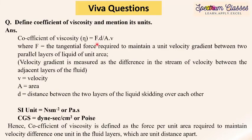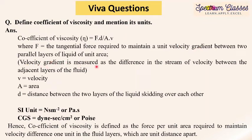The next question: define coefficient of viscosity and mention its units. Coefficient of viscosity is represented by eta (η) and equals the tangential force F required to maintain a unit velocity gradient between two parallel layers of liquid of unit area. Velocity gradient is the difference in stream velocity between adjacent layers of the fluid. Here A is the area, d is the distance between the two layers, and v is the velocity.